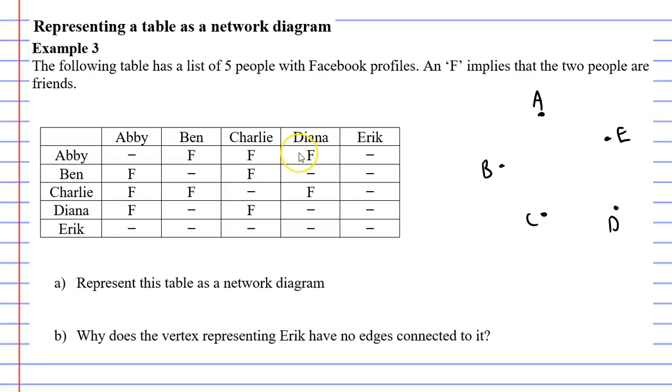Okay, so first of all you'll notice that Ben and Abby are friends and you'll actually notice this in two different places where it says Abby and Ben are friends. Alright, so that means A and B will be connected with an edge.